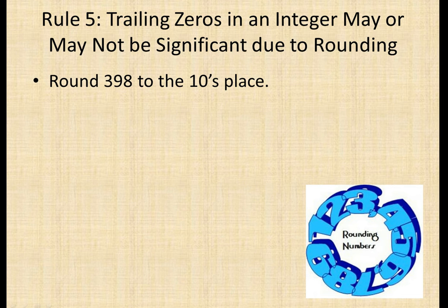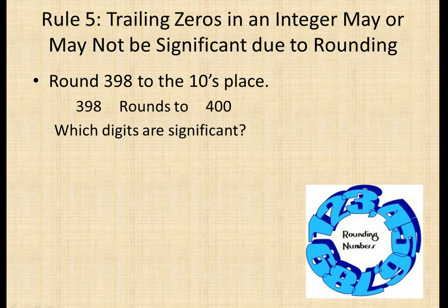If we round 398 to the tens place, 398 rounds to 400. The 8 makes the 9 a ten, so it carries and becomes 400. In a sense, we're asking: is 398 closer to 400 or closer to 390? It's closer to 400, so it rounds to 400.